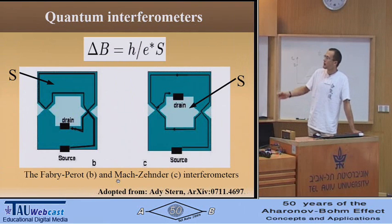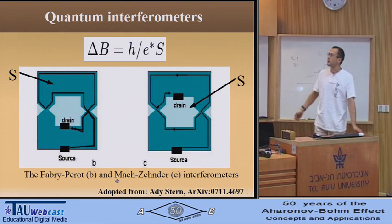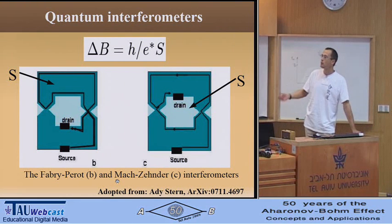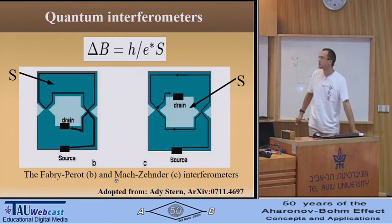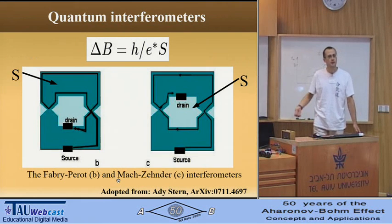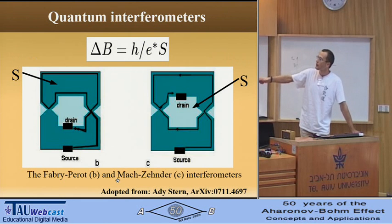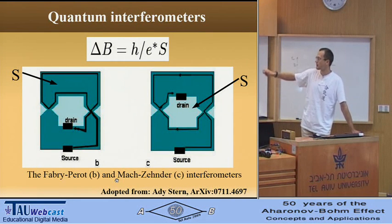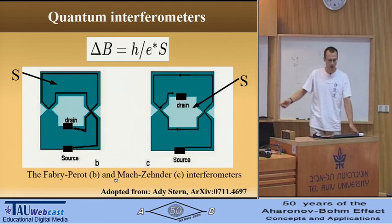Also about quantum interferometers — everybody here knows that with the help of edge states and quantum point contacts, it is possible to realize two types of interferometers: the Fabry-Perot interferometer and the Mach-Zehnder interferometer. This picture is from the review of Heiblum.